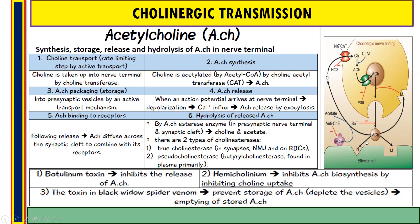The fifth step involves hydrolysis of released acetylcholine to terminate its action. This is accomplished by the enzyme acetylcholinesterase, which breaks down acetylcholine into choline and acetate. Drugs that inhibit this enzyme are called anticholinesterase agents, and they increase the level of acetylcholine. There are two types of cholinesterase enzyme: true cholinesterase, located at the synapse, neuromuscular junction, and red blood cells; and pseudocholinesterase (also called butyrylcholinesterase), which is mainly found in plasma.